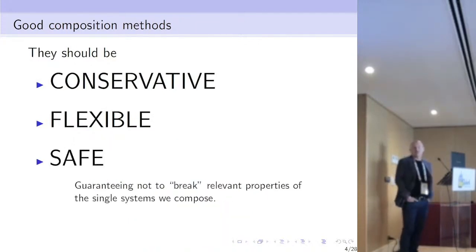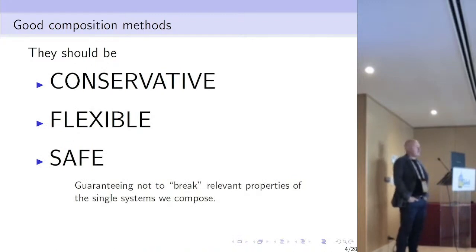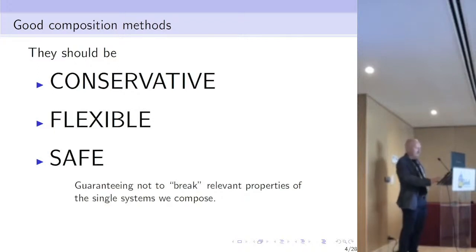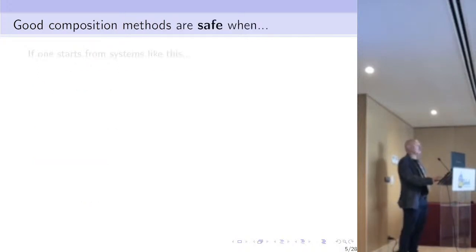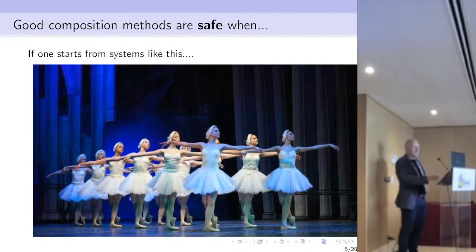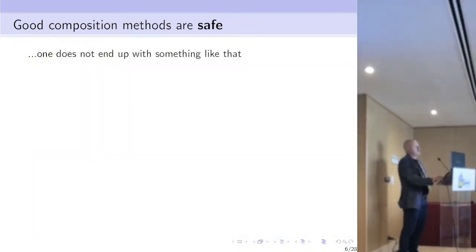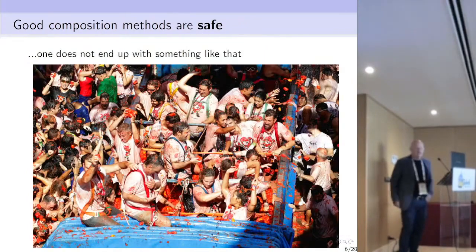And it should be safe. Of course, a good composition method should guarantee not to break relevant properties of the systems we compose. In a nutshell, a good composition method is safe when, if one starts from systems that look good, one shouldn't end up with something broken.